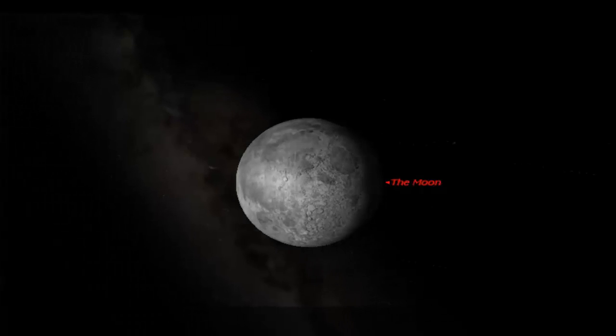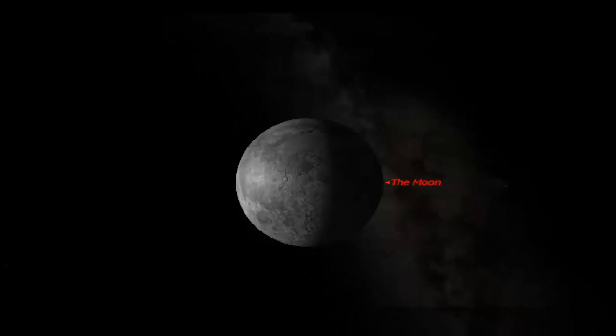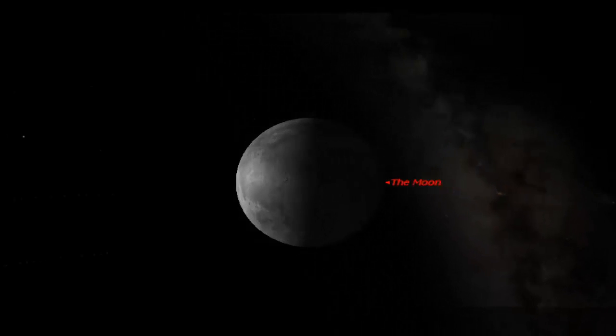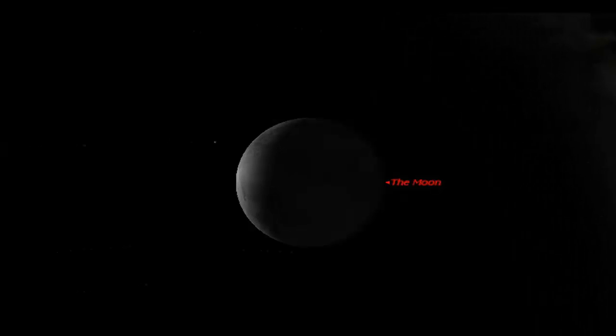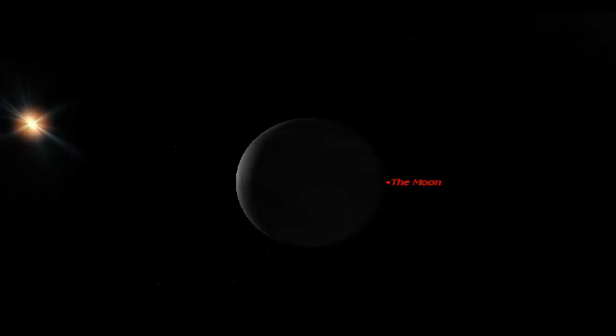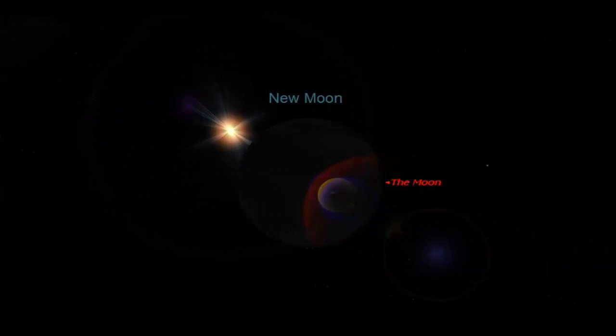One thing that simulation didn't really show was that the moon doesn't go around us and obviously we're going around the Sun also. If you watch very closely on this simulation as we're progressing through different phases here, we're going into the waxing as the lit part of the moon increases.